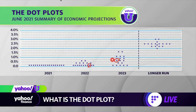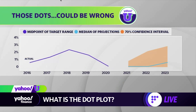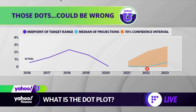The last time we got this projection, which was in March of this year, the median dot was showing no rate hikes through 2023. Now we've seen the dot plot many times. But there's also another chart that is part of the dot plot document. The light blue line shows the median dots in the latest dot plot, with no rate hikes in 2021 or 2022, but the median dot showing two interest rate hikes by the end of 2023.